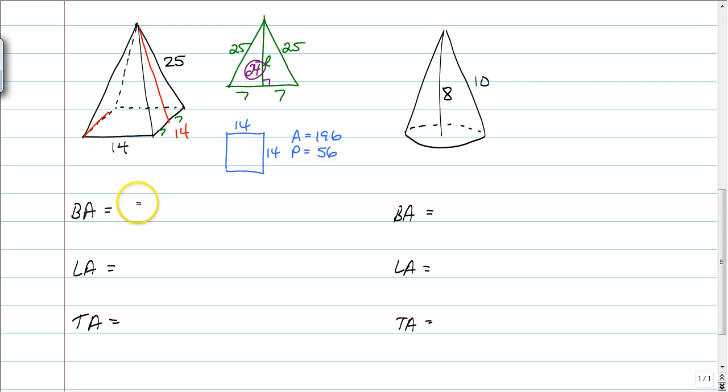Base area, just mentioned, 196 units squared. The lateral area is one half of our perimeter of 56 times the slant height, which we found, is 24. So, one half of 56 times 24 is going to give us a total lateral area of 672 units squared.